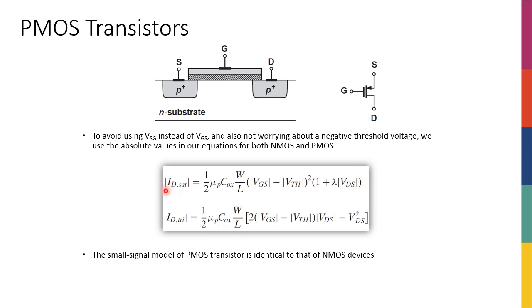Similar to NMOS, for PMOS, we have a saturation current that is independent of VDS, except for the channel length modulation, and we have a triode equation that is exactly like the triode equation of the NMOS.